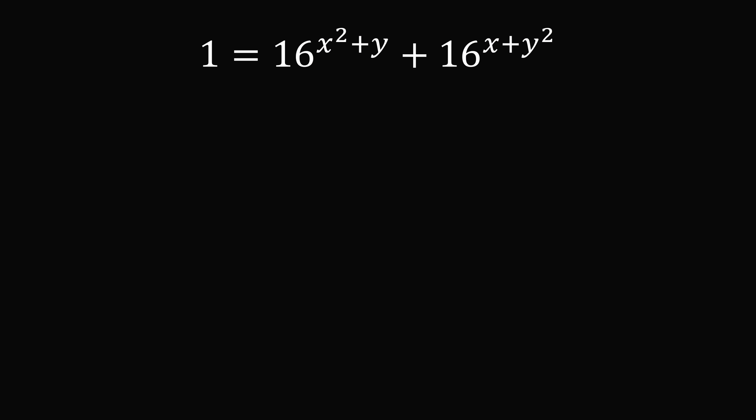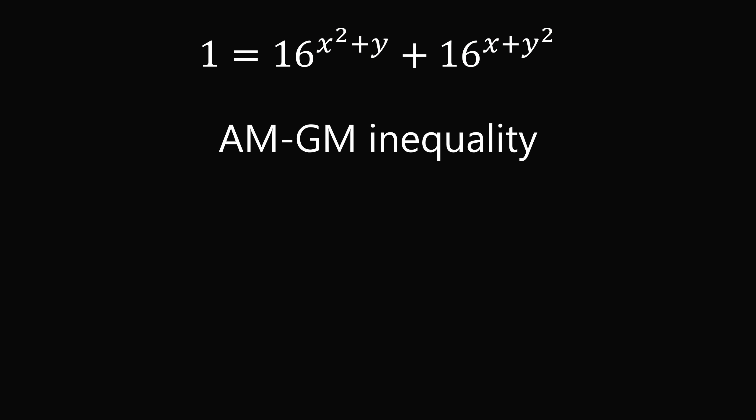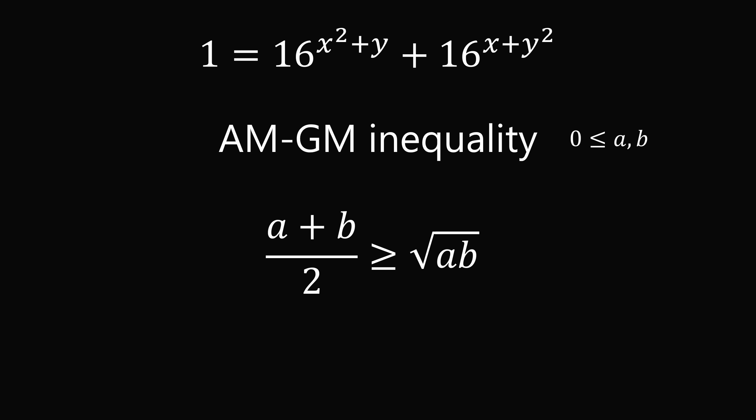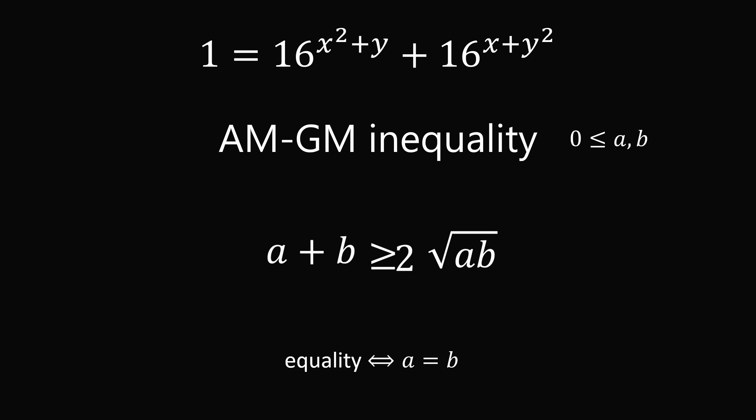Therefore, we can apply the arithmetic mean geometric mean inequality, also known as the AM-GM inequality. For non-negative numbers a and b, we always have the arithmetic mean, a plus b all over 2, is greater than or equal to the geometric mean, which is the square root of the product of a and b. Furthermore, equality holds if and only if a is equal to b. It is oftentimes useful to rewrite this by multiplying both sides by 2, so we have the sum of a and b is greater than or equal to 2 times the square root of the product of a and b.